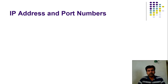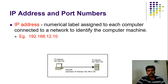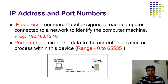IP address and port number play an important role in socket programming. An IP address is a numerical number which is assigned to every computer in the network. It is used to identify the computer physically so that we can connect to the system before exchanging any data. For example, the pattern of an IP address is 192.168.12.10. It is used to connect the system physically.